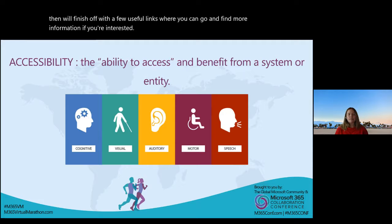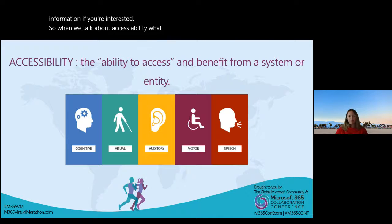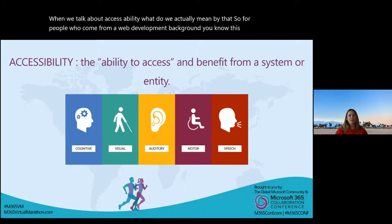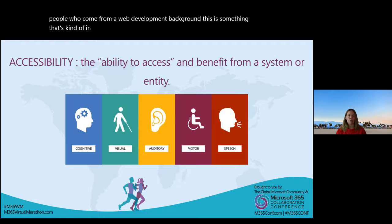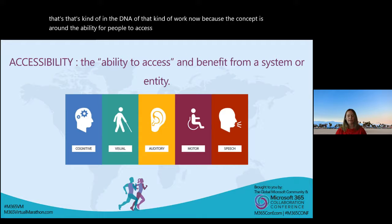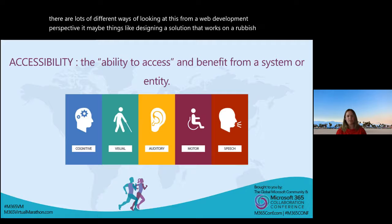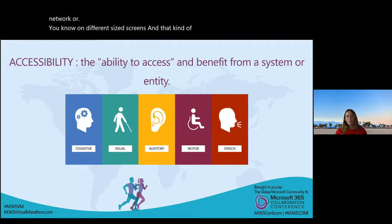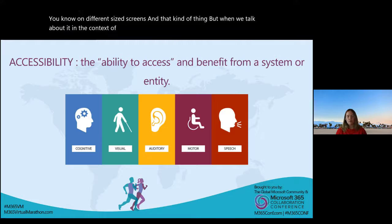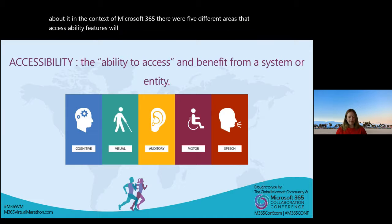So when we talk about accessibility, what do we actually mean by that? For people who come from a web development background, this is something that's in the DNA of that kind of work, because the concept is around the ability for people to access and benefit from a system or entity. When we talk about it in the context of Microsoft 365, there are five different areas that accessibility features will typically support, and these are: cognitive, vision, auditory, motor, and speech.